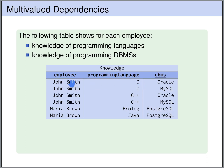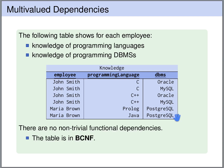The employee name does not uniquely determine the programming language. It also does not uniquely determine the database management system. The programming language does not determine the employee name, and also the database management system does not uniquely determine the employee name — it does in this particular database state, but not in general. So we don't have any non-trivial functional dependencies; therefore this table is in Boyce-Codd Normal Form.